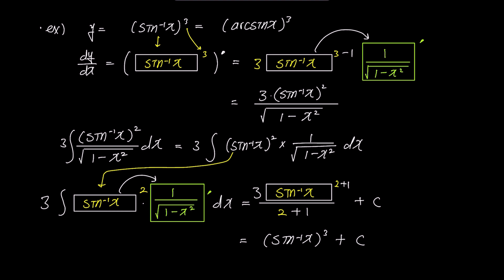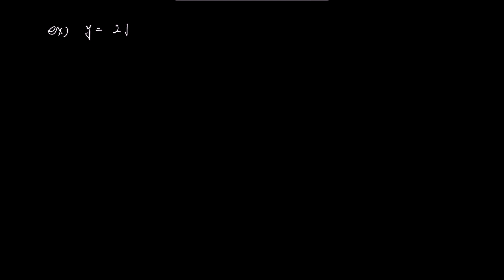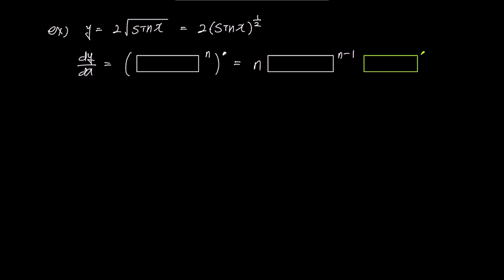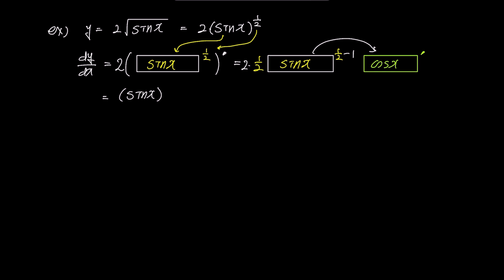Finally, we've reached the last example. To find the derivative of 2√sinx, let's rewrite it as 2(sin x)^(1/2). It's clear that sin x goes inside the box. Applying the box rule with 2 out front, sin x inside the box, and n = 1/2, we also put cos x in the green box prime. The answer simplifies to (sin x)^(−1/2) times cos x, which can be expressed as cos x / √sin x.